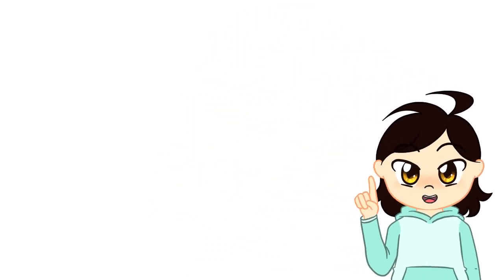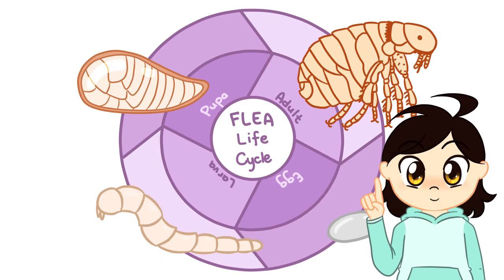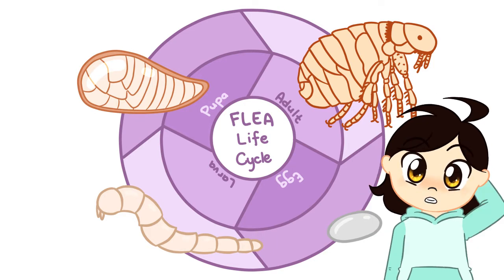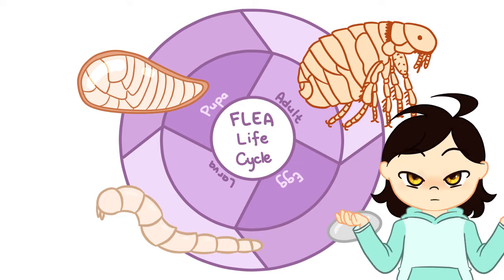A key thing to keep in mind is their life cycle. If we interrupt any part of this, we can stop the cycle, resulting in fewer and fewer fleas until they're all gone. Of course, we have to continue treatment long enough to make sure they're all gone. If a few are left and we stop, those few can propagate and start the cycle all over again.